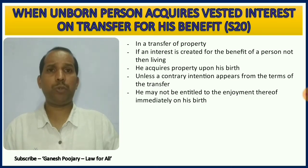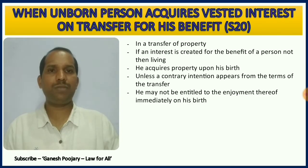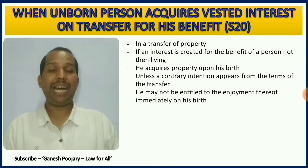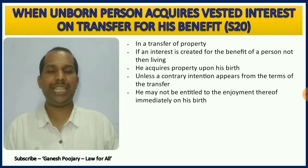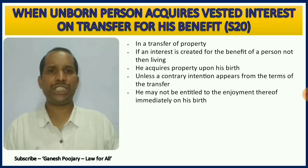Section 20 discusses the vested interest of an unborn person. I have already discussed this when covering the transfer of benefit to the unborn person under section 13. The unborn person will get vested interest only after his birth — that is very important to remember. He might get possession immediately after birth, or maybe after attaining a certain age such as 10, 15, or 18 years. If a particular age is mentioned, he gets the property at that age; till then he has vested interest.